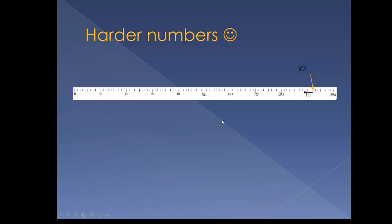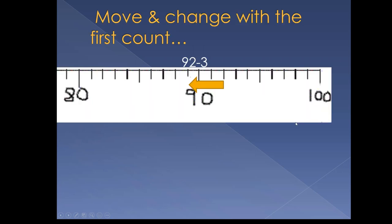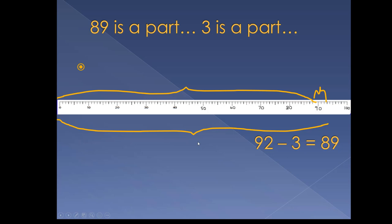Let's get a little harder. 92 minus 3. Be sure to move and change when you start counting. 92 is the whole. Count back. 91, 90, 89. 92 minus 3 equals 89. 89 is a part. 3 is a part. 92 is a whole. 92 minus 3 and 89. Two ways of describing the exact same amount.